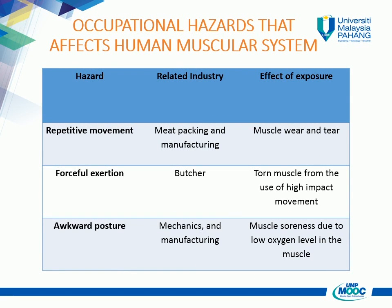Some occupational hazards can affect the function of the human muscular system. For example, repetitive movement and forceful exertion in meatpacking and manufacturing industries, and awkward postures among mechanics and manufacturing workers. Repetitive movement can cause muscle wear and tear, while forceful exertion causes torn muscle from high-impact movement. Awkward posture can cause muscle soreness due to low oxygen levels in the muscle.